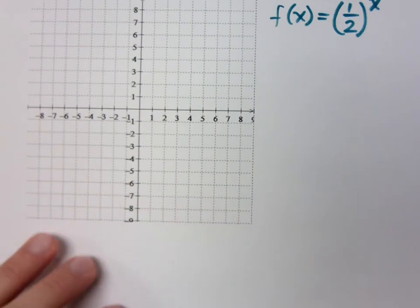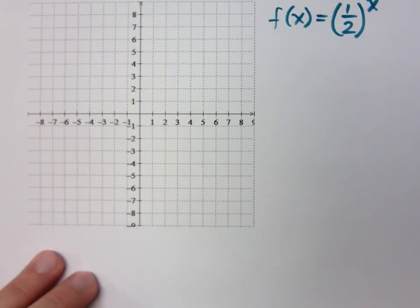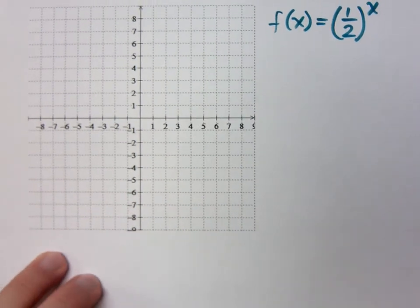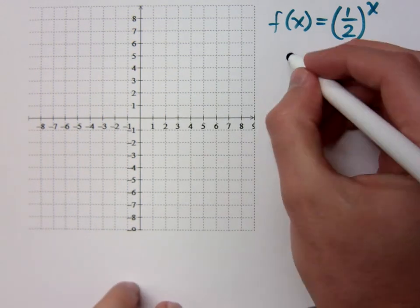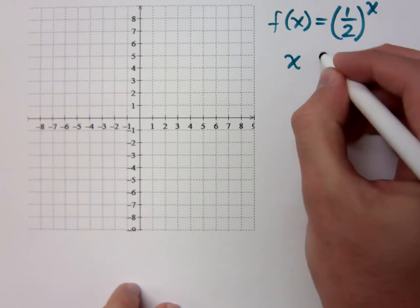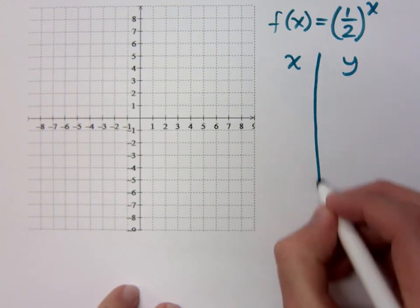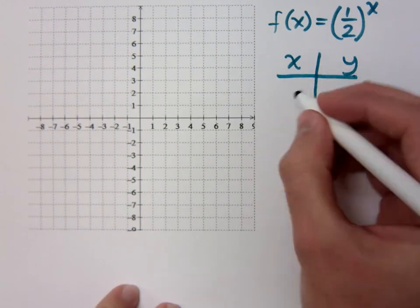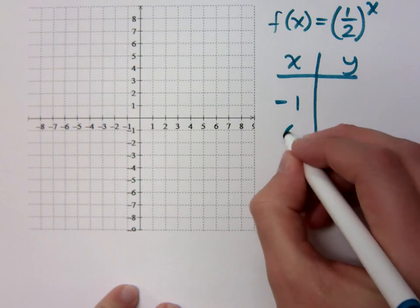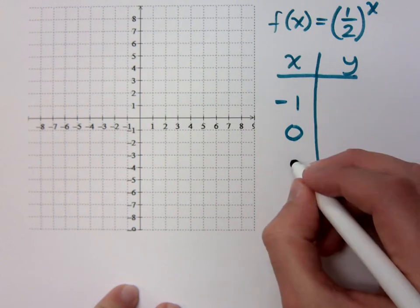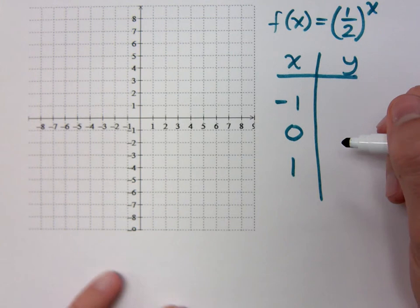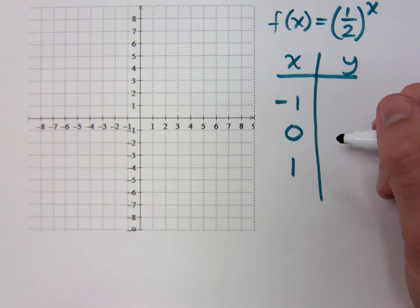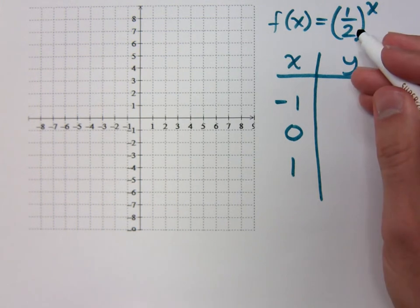Let's take a look at another exponential function, f of x equals 1 half to the x. The base is not 2, it's 1 half, but we can still figure out what those key points are based on what I already told you. The key numbers you're going to plug in are negative 1, 0, and 1. We said that when we plug in negative 1, we just get the reciprocal of the base. My base is 1 half — what's the reciprocal?